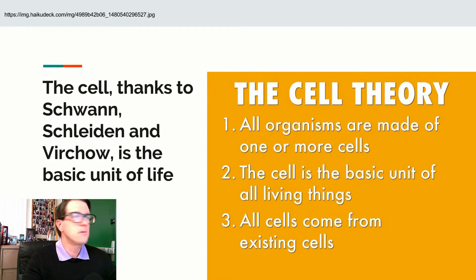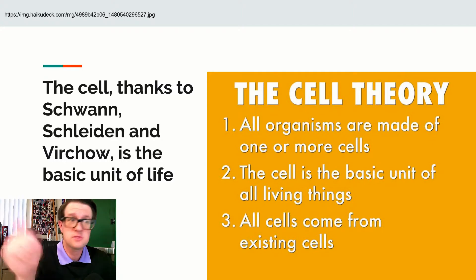Ultimately, what happened was, through the work of several people, was the development of something referred to as cell theory. And cell theory turns out to have three postulates. First one is, if you're a living organism, you have cells. Second postulate is, the basic unit of life would be cells. Third postulate is, cells come from cells.